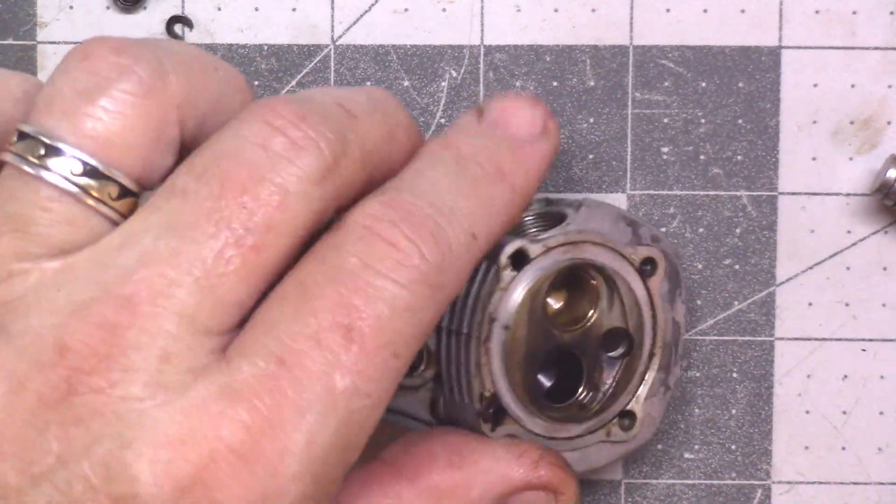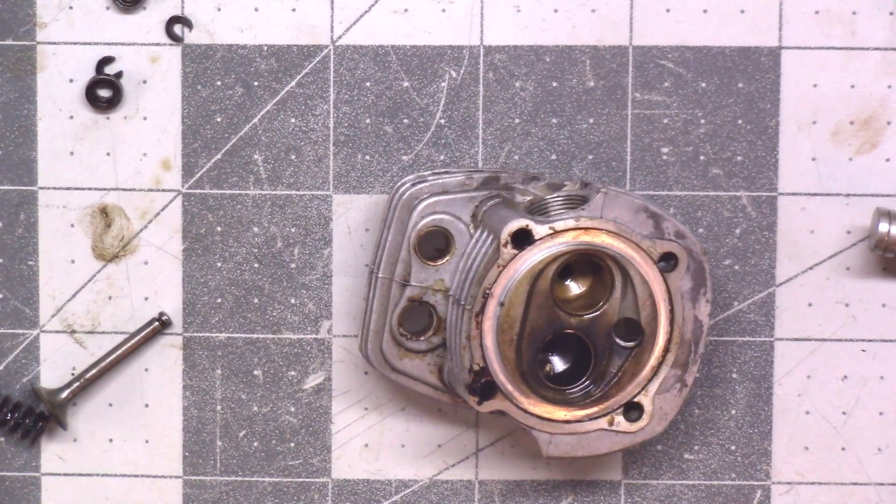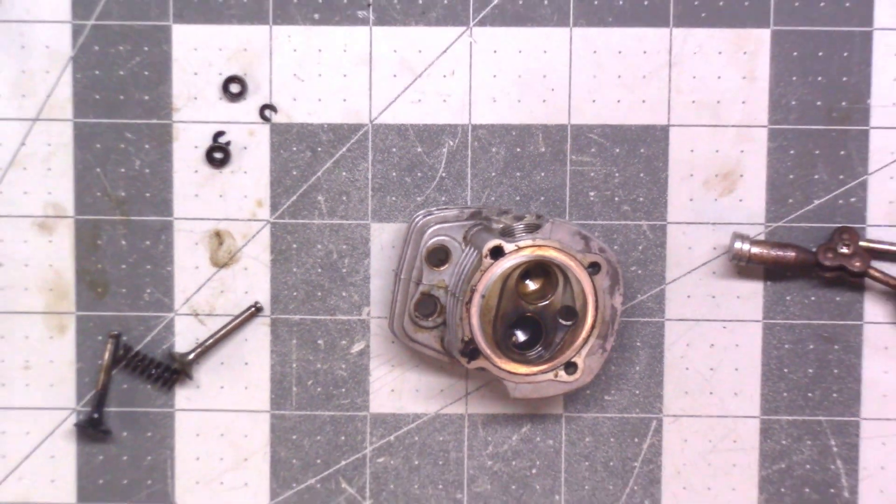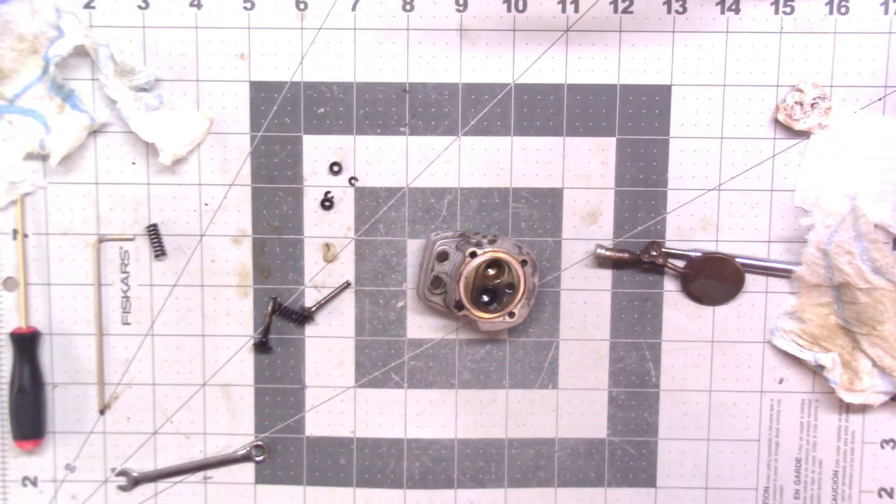So, there you have it. That's the disassembly of the head. Now, all of these parts are going to go into the ultrasonic cleaner. And I'll show you what they look like when they come out. All right.